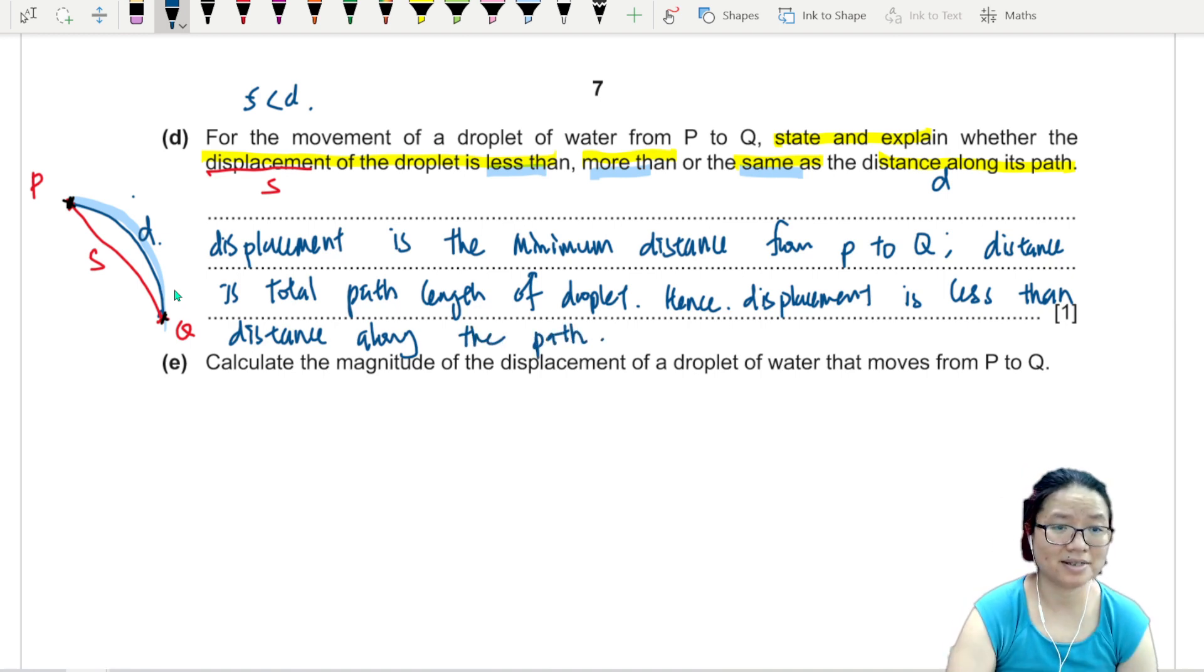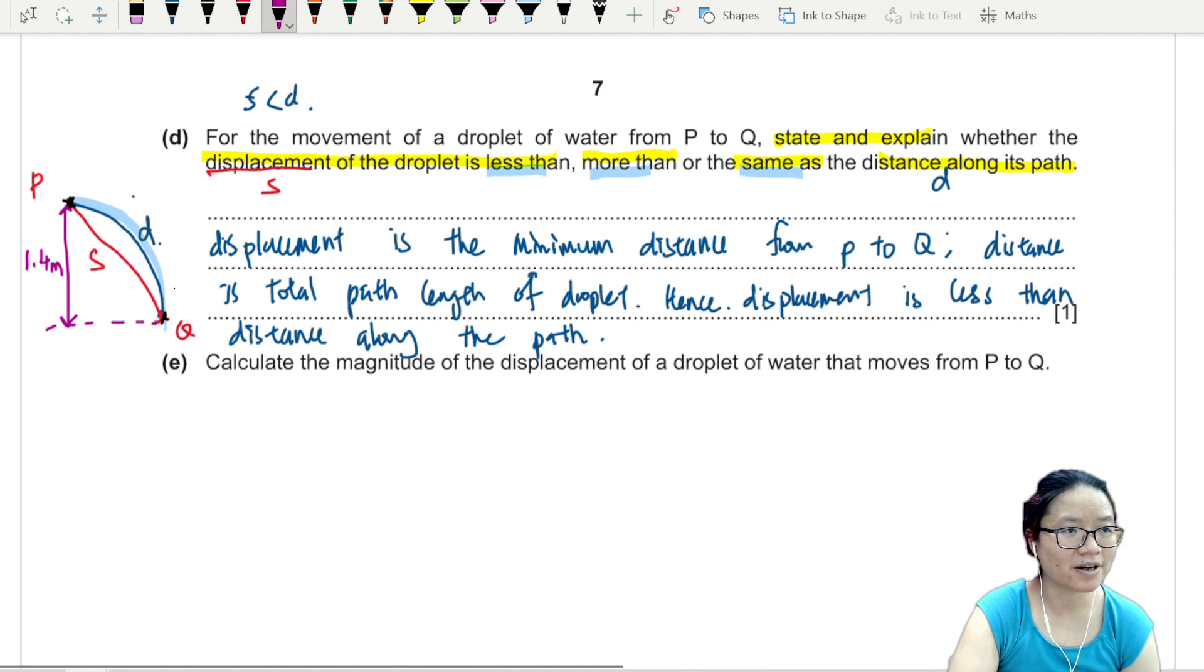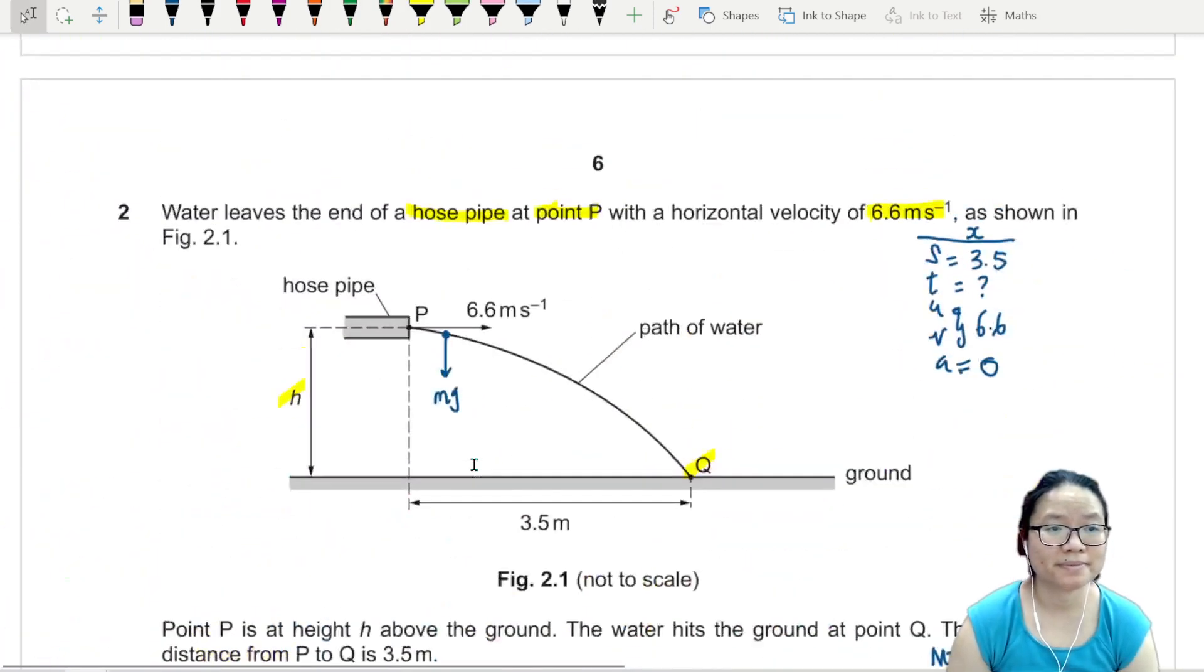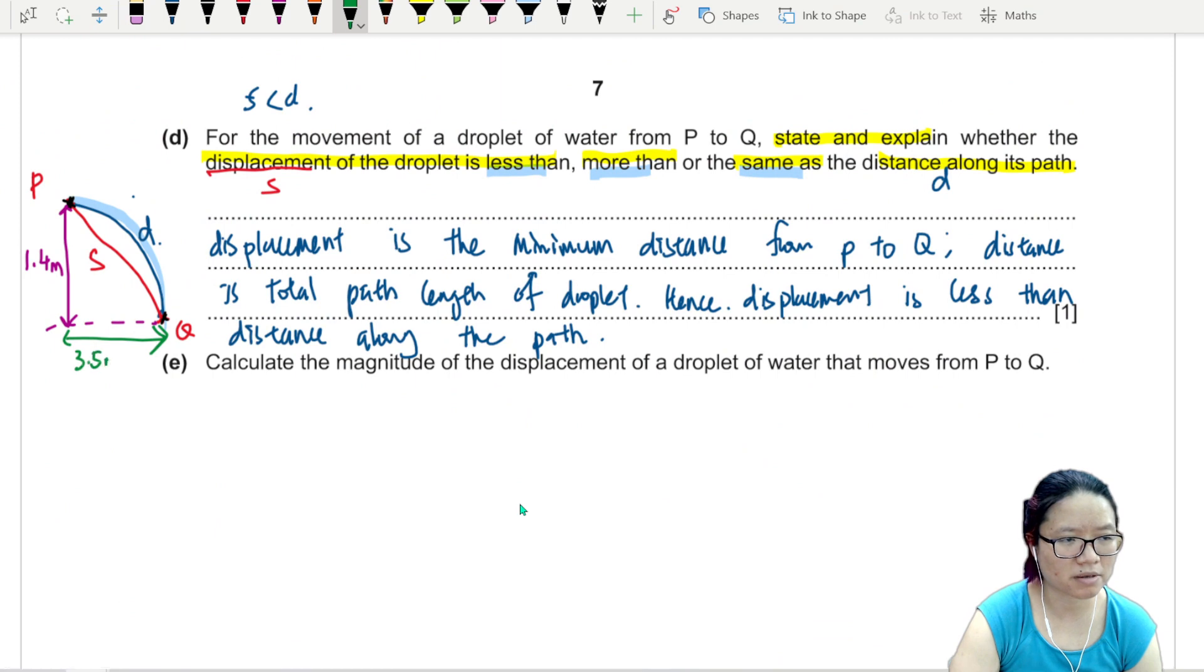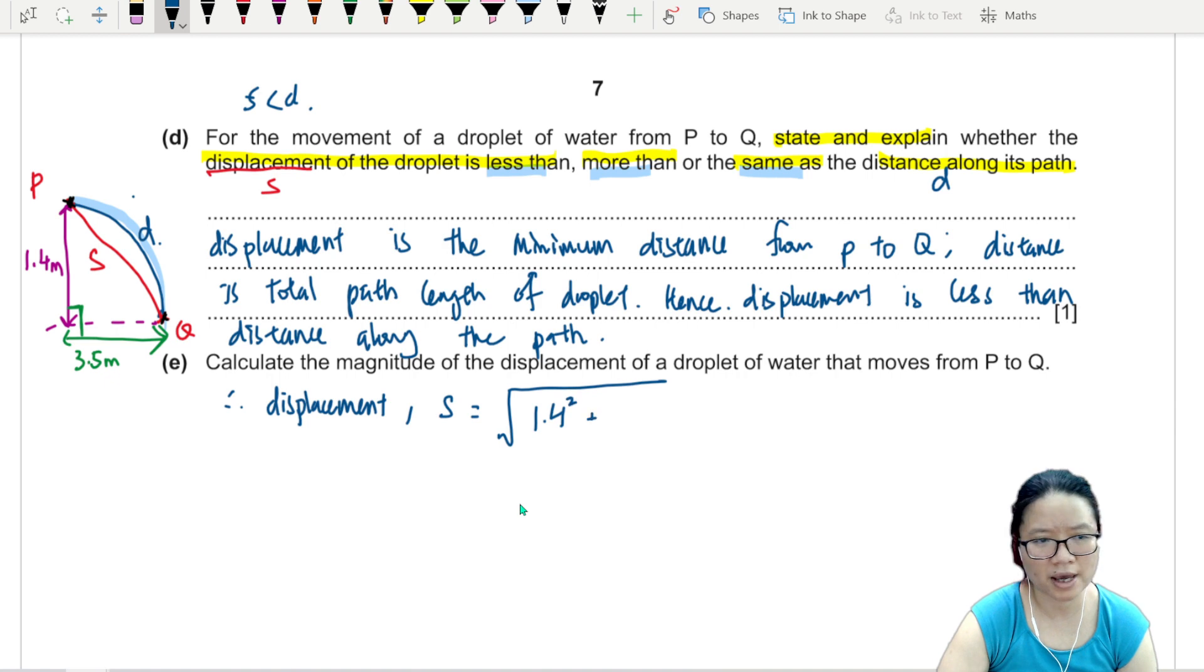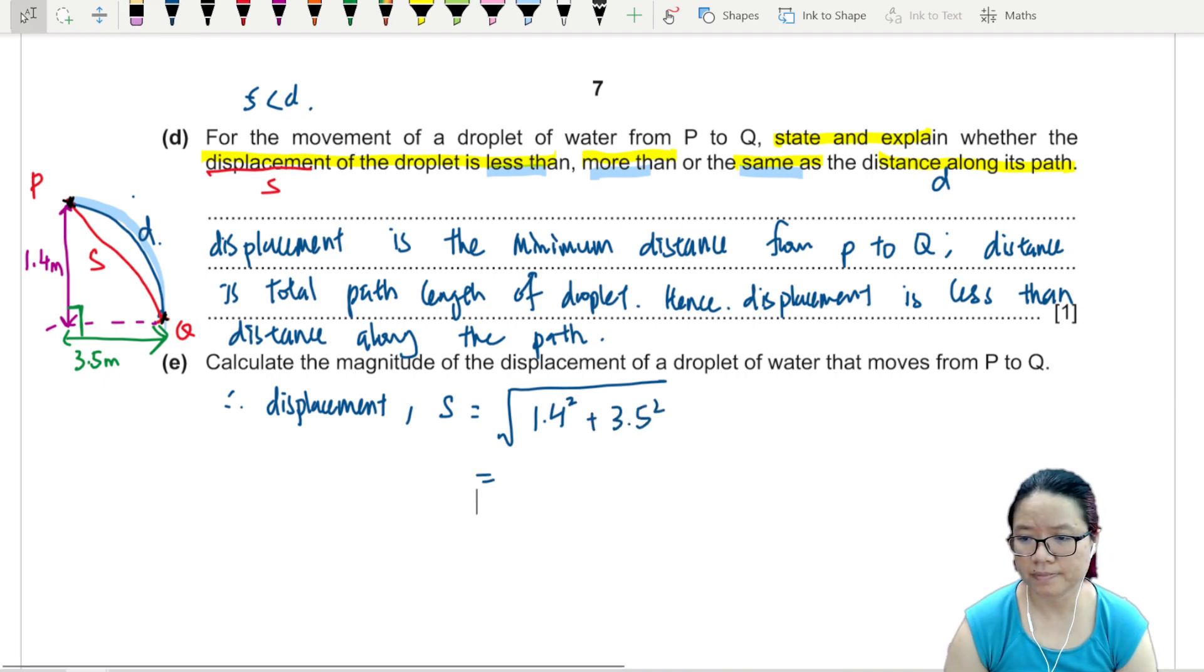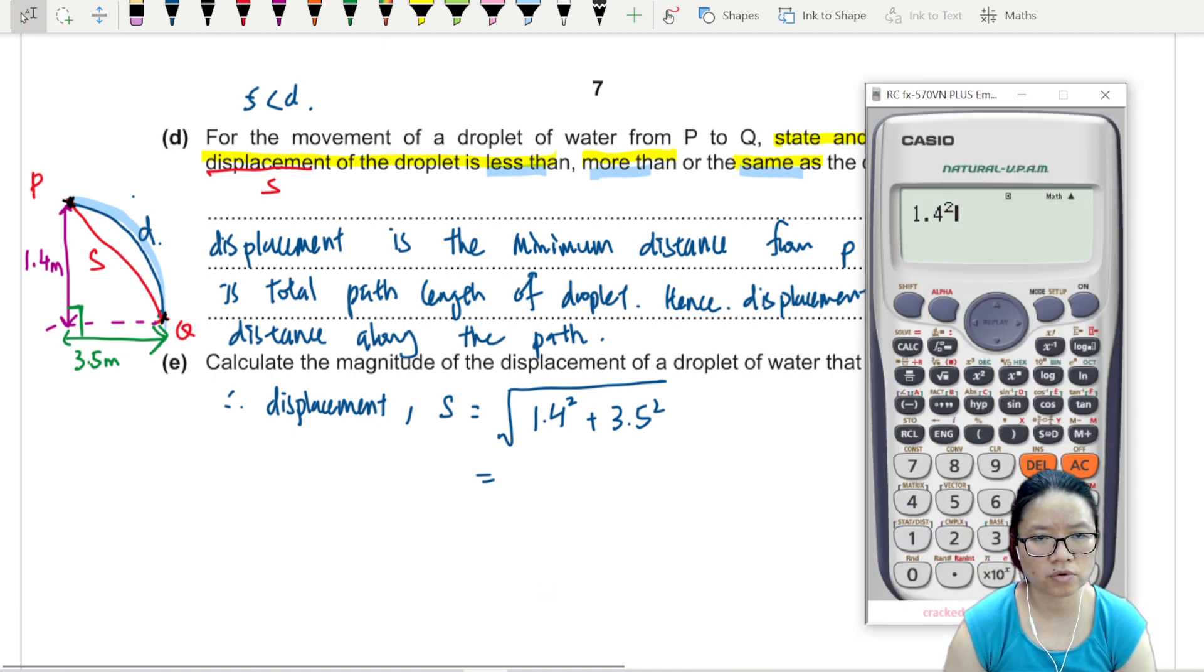Part E, calculate the displacement. Well, I know h, right? It has dropped a distance of 1.4 meters. I know the horizontal distance traveled. It was given to me in the question. That's 3.5 meters. Mine is obviously not drawn to scale, but it doesn't really matter. To find S, because this is our good old 90 degrees, we're going to use Pythagoras. Hence, displacement S, this is equal to square root of 1.4 square plus 3.5 square.